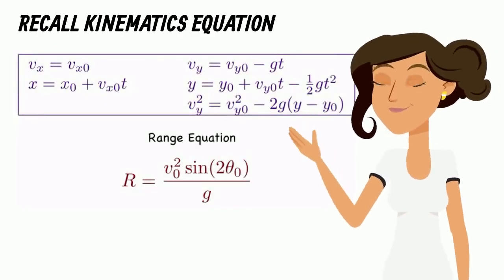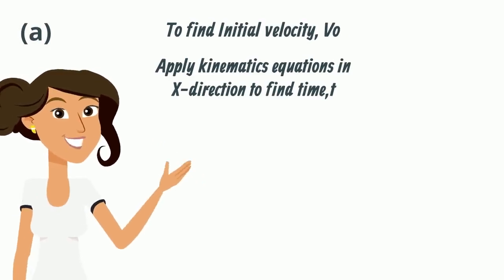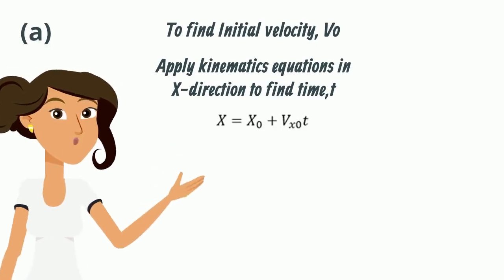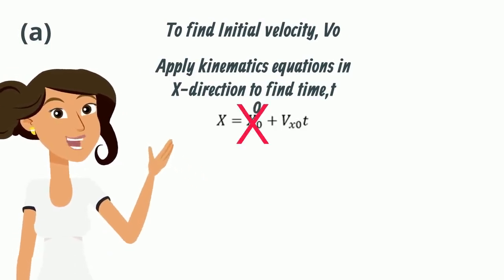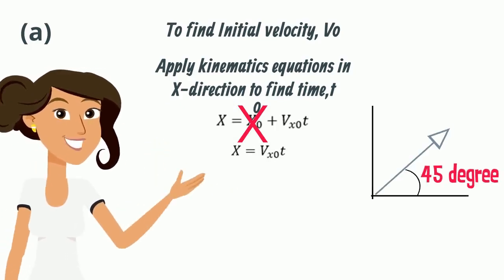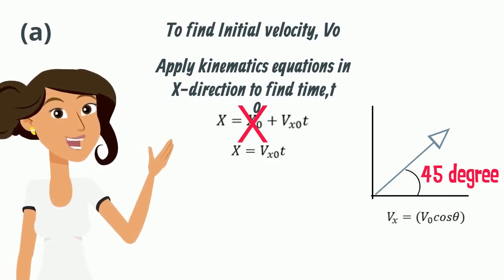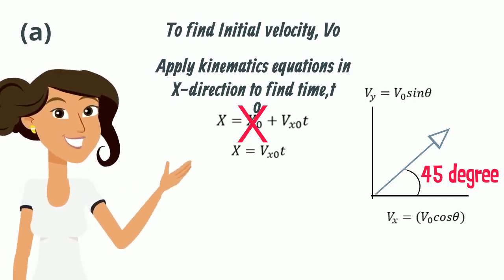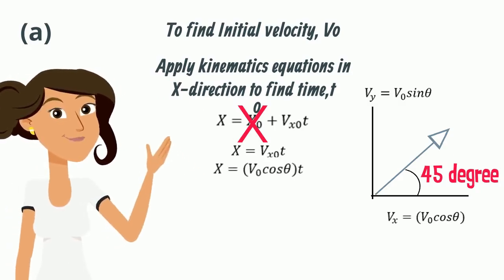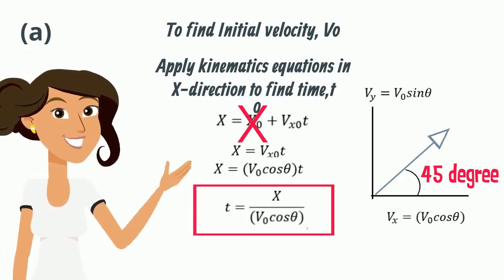Alright, time to recall your kinematic equations. To find initial velocity, apply kinematics in x-direction to find the time equation first. By applying x equals x0 plus vx0 t, we know that initial position of the basketball player in x-direction is 0. The initial velocity has two components, since it has an angle where the x-direction, vx equals v0 cos theta, and in the y-direction, vy equals v0 sin theta. Substituting vx equals v0 cos theta, now we have the time equation, t equals x over v0 cos theta.